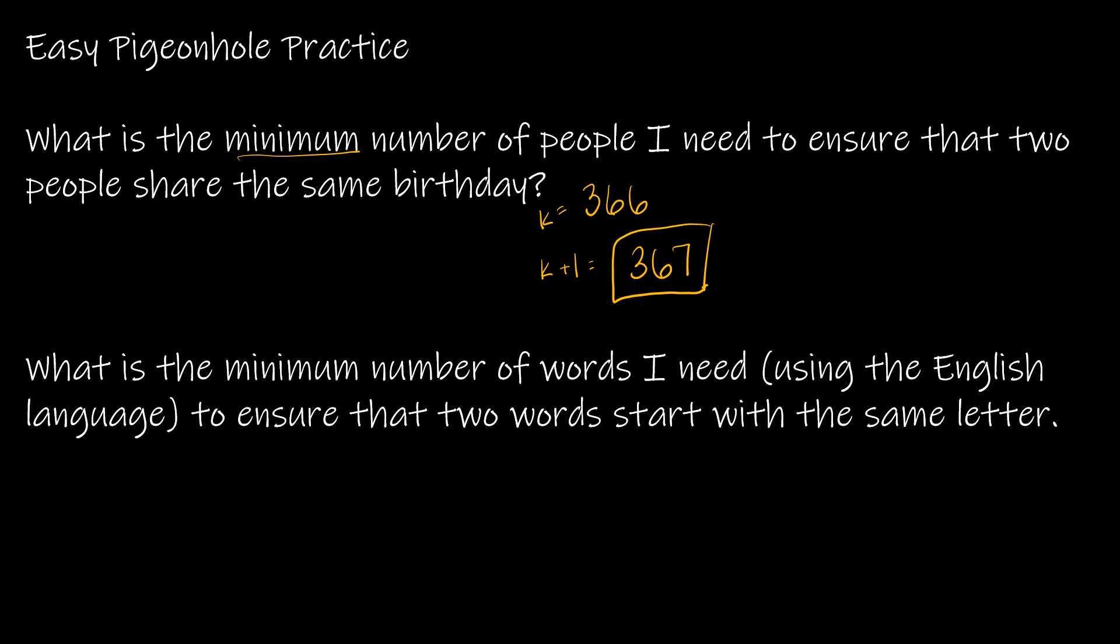What is the minimum number of words I need using the English language to ensure that two words start with the same letter? What's k? How many boxes are there? Well the boxes in this case are the letters. There are 26 letters of the alphabet in the English language. And k plus one would be that I need 27 or more.